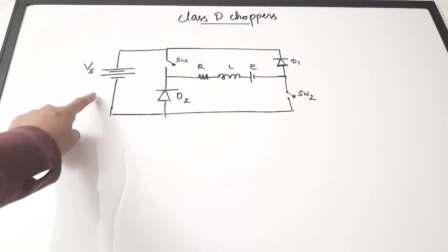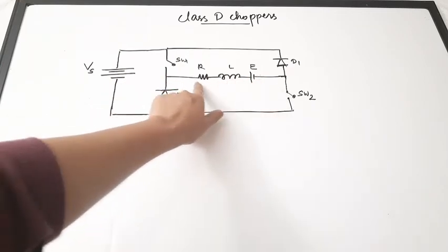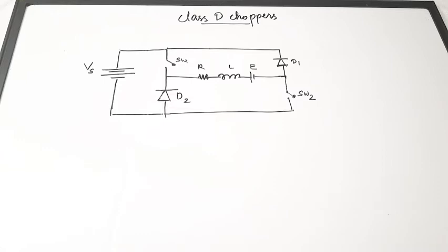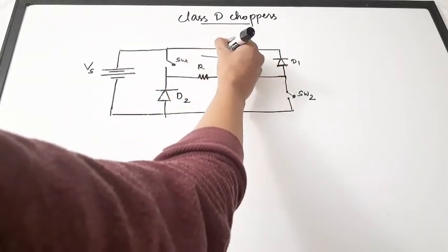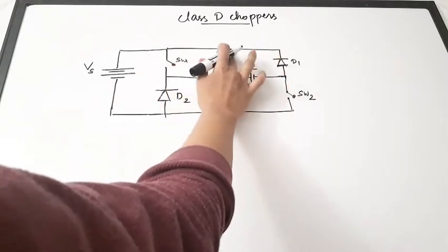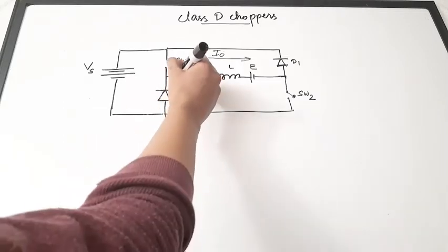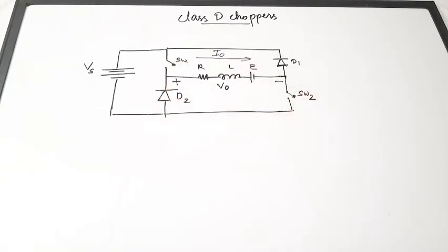This is the circuit diagram of a class D chopper. In this circuit diagram you can see there is a supply voltage, two switches SW1 and SW2, two diodes D1 and D2, and a load branch having resistance, inductance, and a back-EMF cell. The current direction I0 flowing through the load in one direction is taken as positive, and the voltage polarity V out with positive terminal at the top is taken as the reference positive voltage.